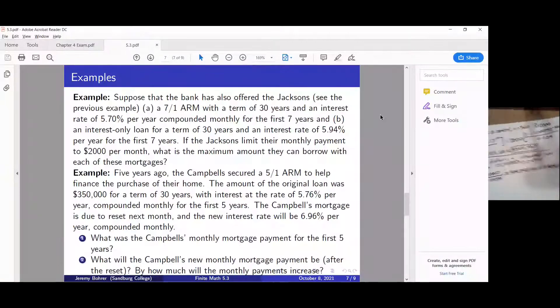We can look at the next problem. Five years ago, the Campbells secured a 5/1 adjustable rate mortgage to help finance the purchase of their home. The amount of the original loan was $350,000 for a term of 30 years with interest at the rate of 5.76% per year compounded monthly for the first five years. The Campbells' mortgage is due to reset next month and the new interest rate will be 6.96% per year compounded monthly.